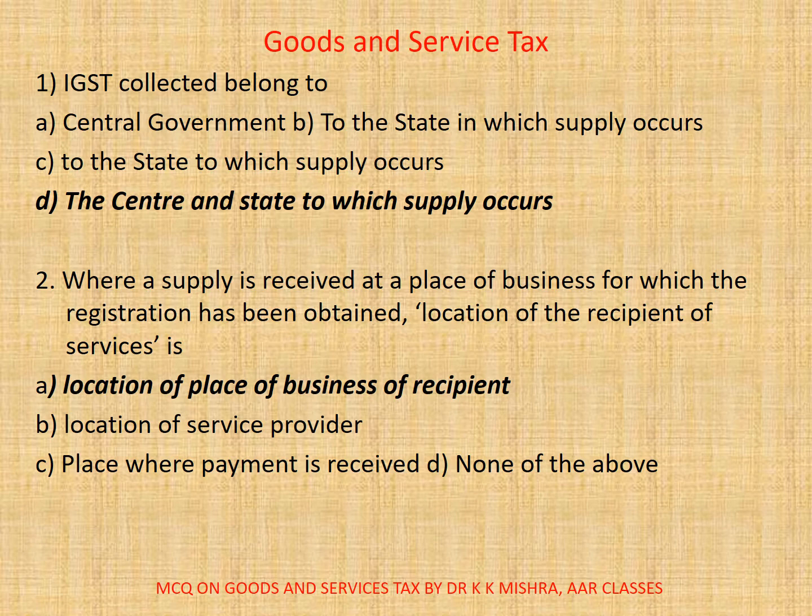Question 2: Where a supply is received at a place of business for which the registration has been obtained, the location of the recipient of services is — A. location of place of business of recipient, B. location of service provider, C. place where payment is received, D. none of the above. Correct option is A: location of place of business of recipient.